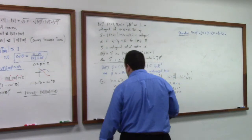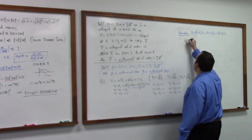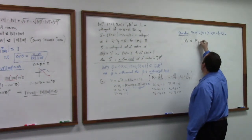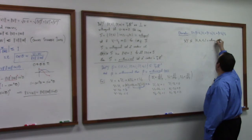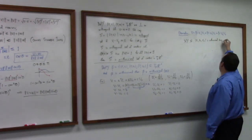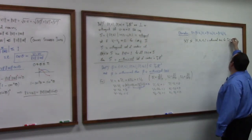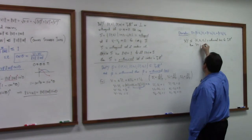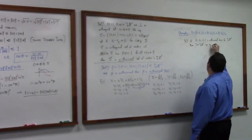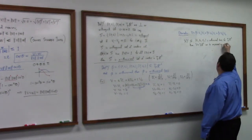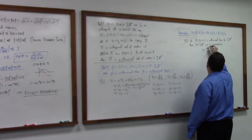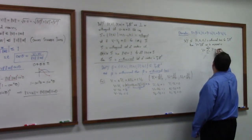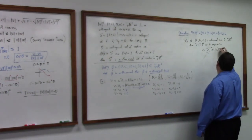So like theorem. If e one, e two, e three is orthonormal basis for t p R three. Then v in t p R three can be expressed as v equals to the sum i equals one, two, three of v dot e sub i times e sub i.